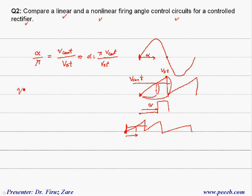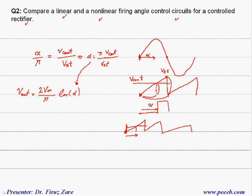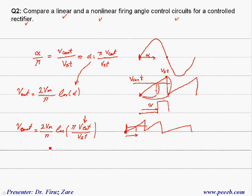If we substitute alpha into the output voltage equation, we can see that the output voltage is a function of cosine(V_control). This means that by changing the control signal the output voltage changes, but not linearly. So we can design another control circuit such that we have a proportional relation between the output voltage and V_control. In this case we need to change the control circuit.